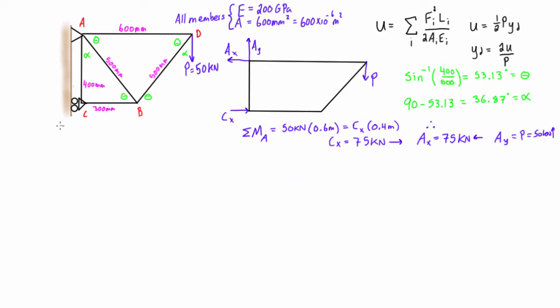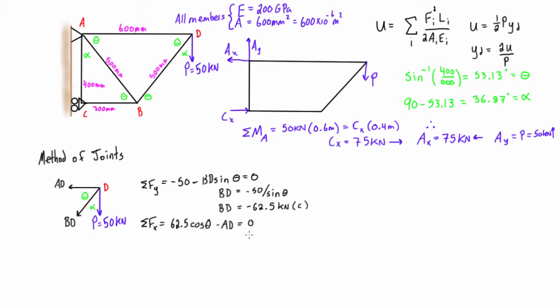All right, so the next thing that we're going to do is the method of joints to break this down one joint at a time. We'll start with joint D to find out the internal force in BD and AD, which are negative 62.5 kilonewtons - that negative just means it's in compression - and AD is 37.5 kilonewtons.